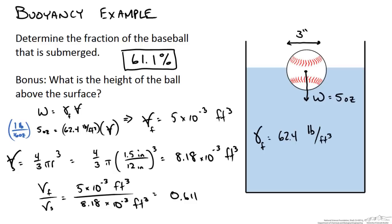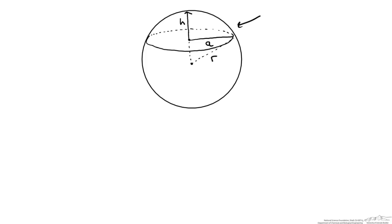Now we are going to figure out the height of the ball that is above the surface. So what we are looking for is this height h of the baseball that is above the surface of the water. And so there is a relationship we look up for the volume of the spherical cap, which is pi times h squared over 3 times 3r minus h.